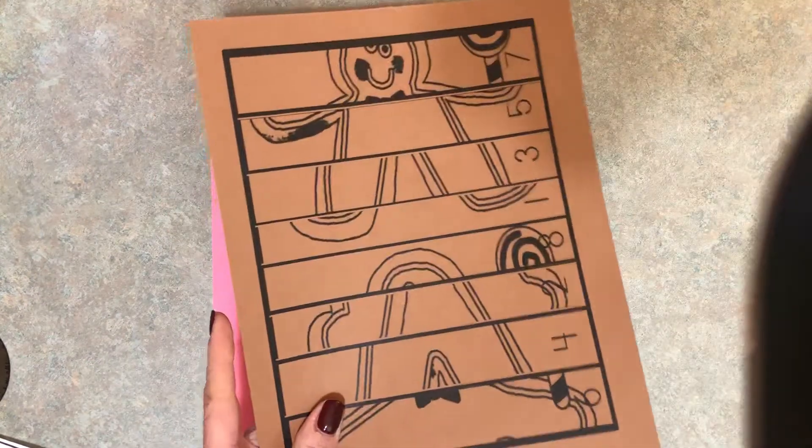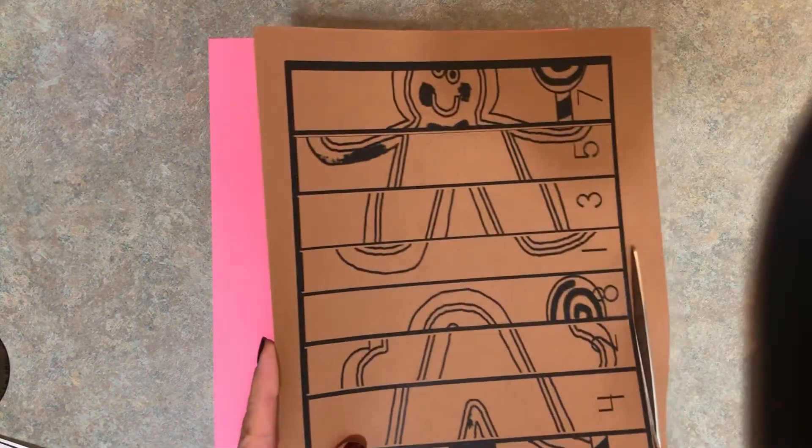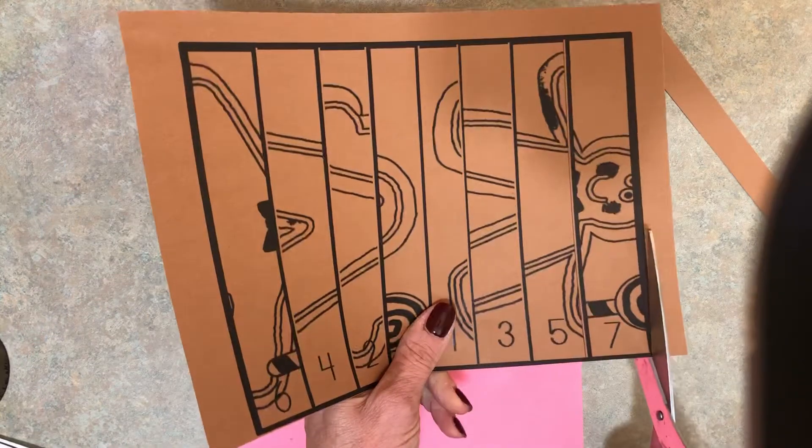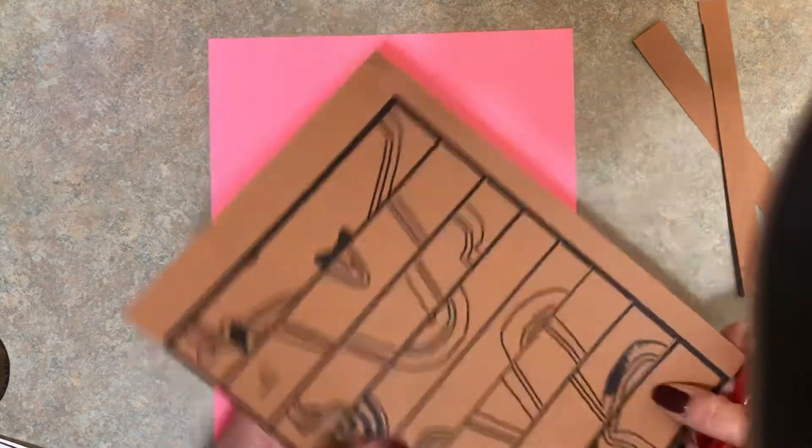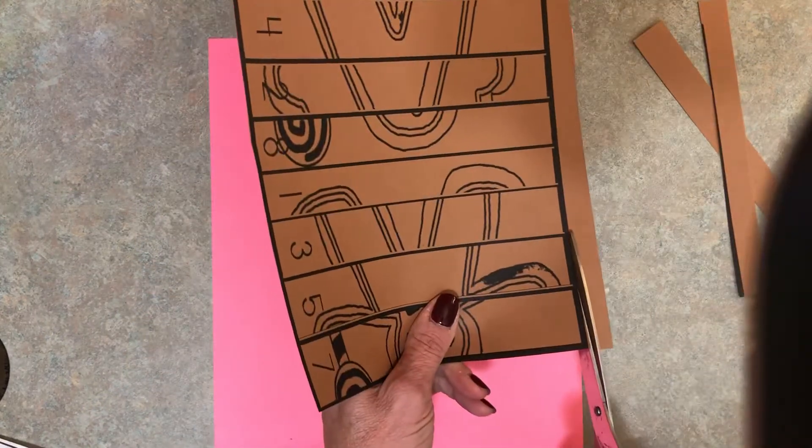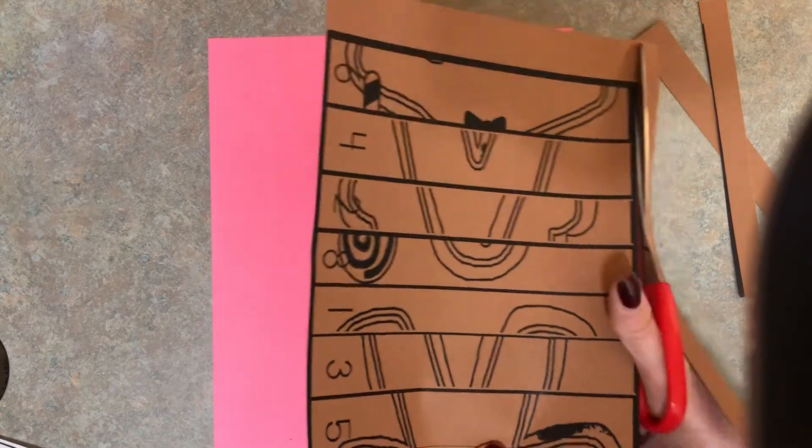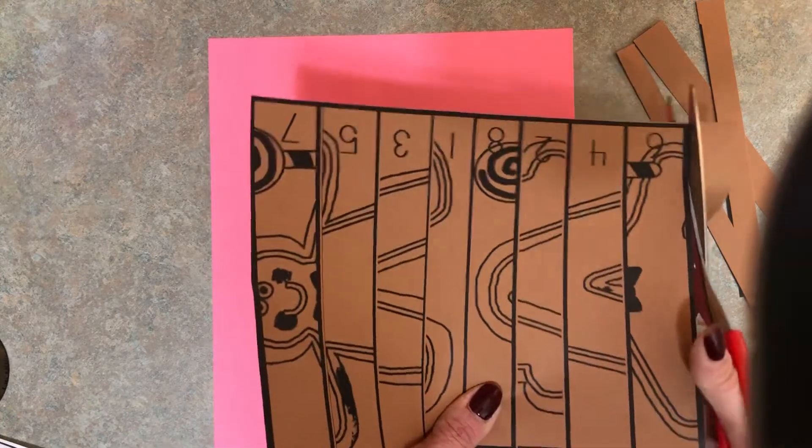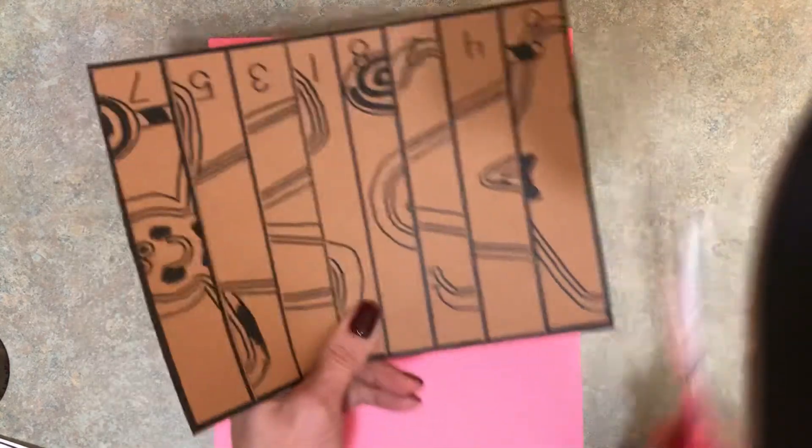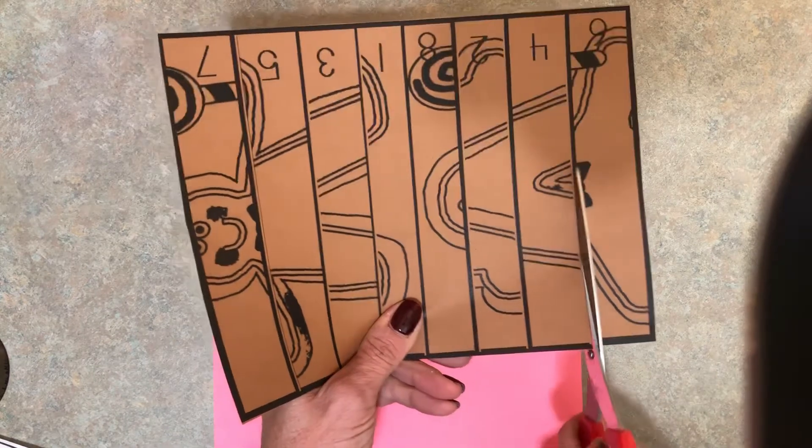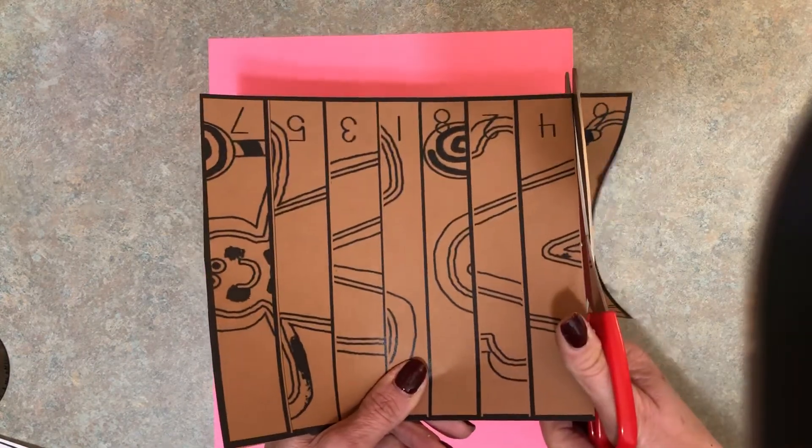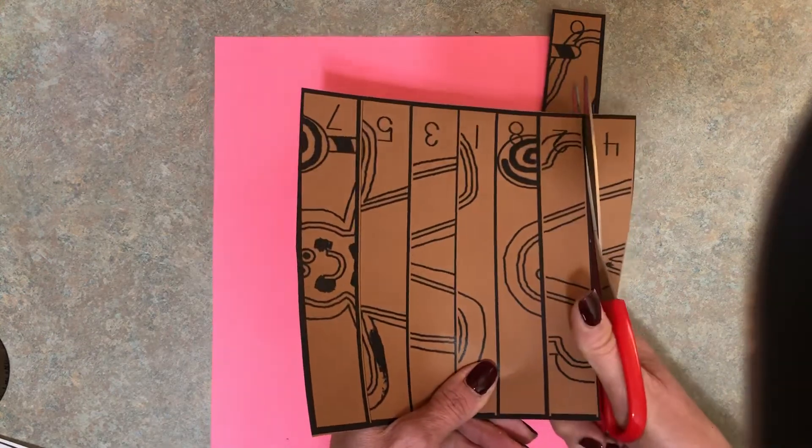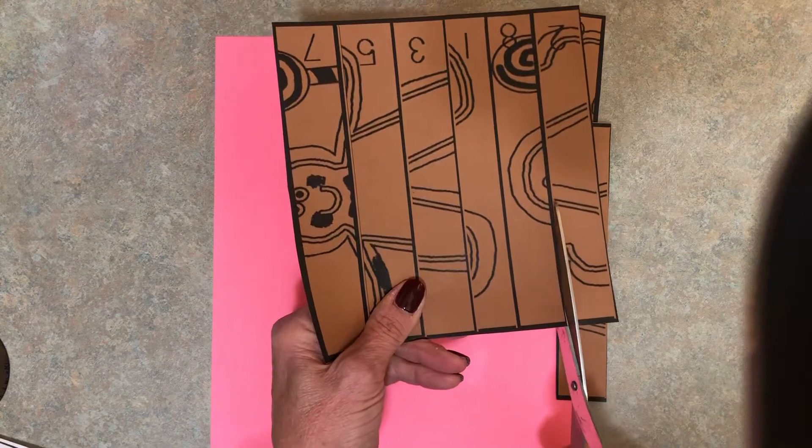you're going to cut around the box, okay? You're going to put those off to the side, and then you're going to cut down each strip carefully. Try to stay on the black line.